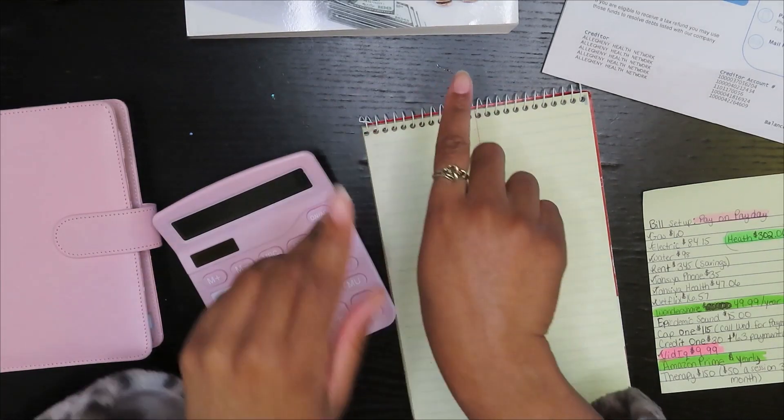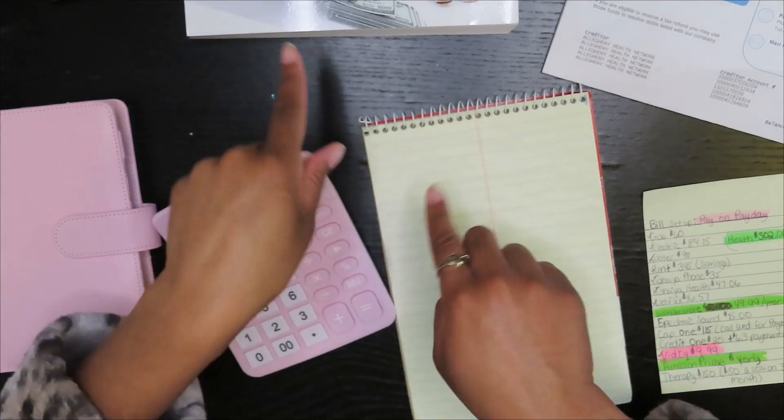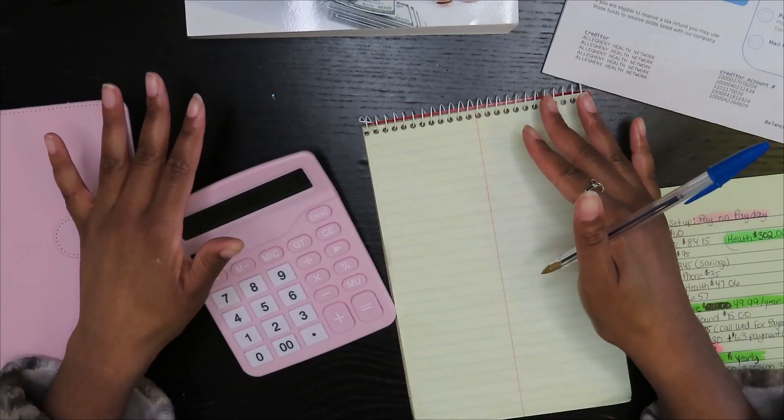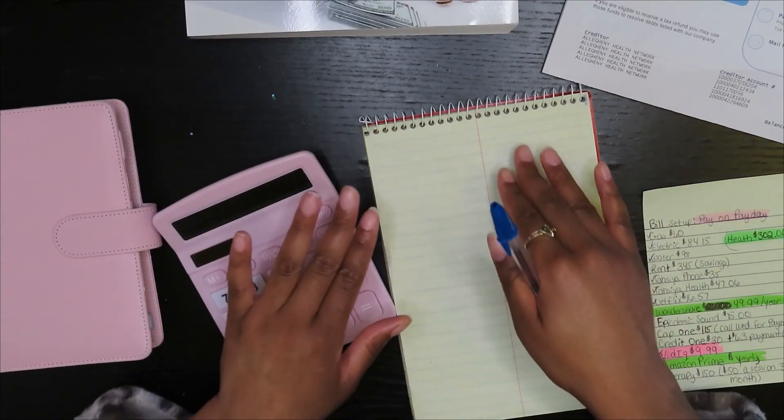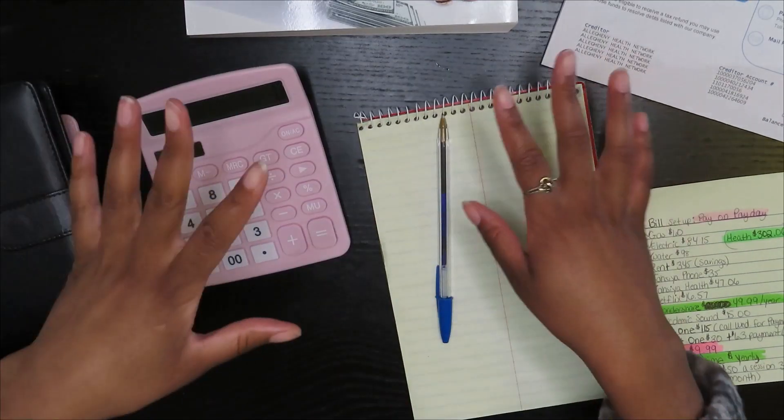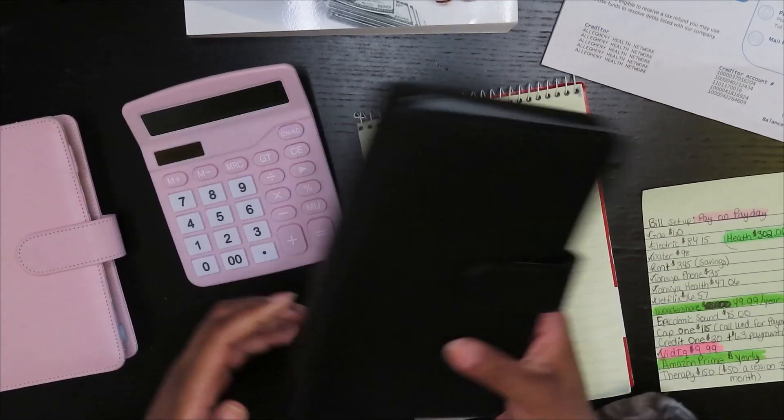What is up cuties, it is your girl Justina and welcome back. I'm going to show you all of the cash envelopes that I have. Okay I'm back, so I got my black binder.